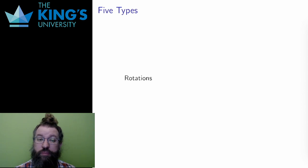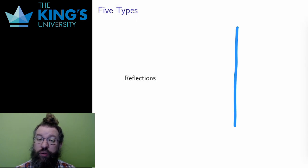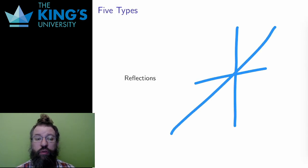The five types are rotations around the origin. The origin can't move, so it needs to be an access point for any rotation. Reflections over any line through the origin. Again, the origin can't move, so a line of reflection has to go through the origin.